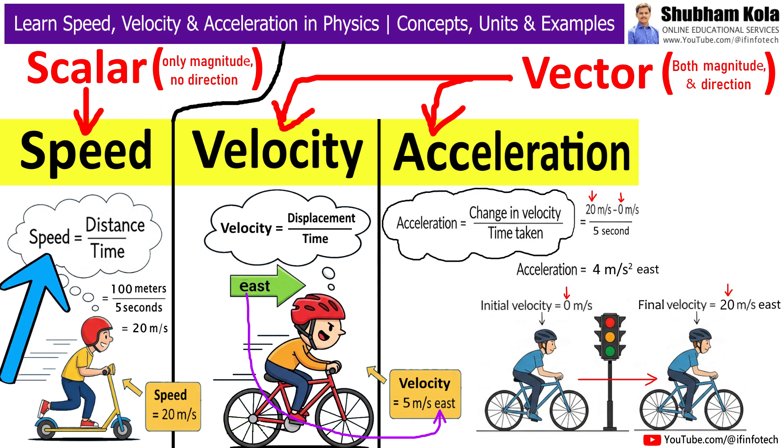We can find speed by dividing the distance you travel by the time you take. The formula is speed equals distance divided by time. Let's take an example. If you travel 100 meters in 5 seconds, your speed will be 100 divided by 5 which is 20 meters per second. This means that your bike is covering 20 meters every single second.